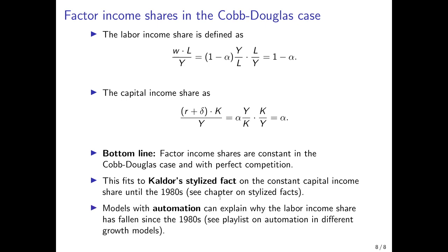However, since the 1980s this is no longer the case. The capital income share increased and the labor income share decreased in many countries, and economists have put forward many different explanations for that. One prominent explanation is that automation can be put forward as a factor driving the increase in the capital income share and the decrease in the labor income share.